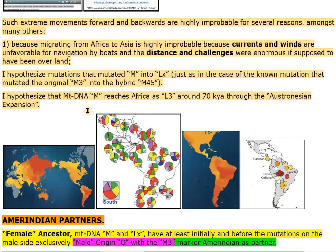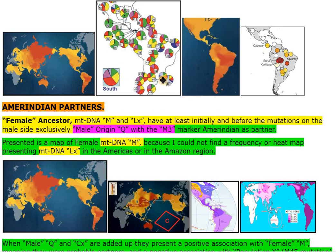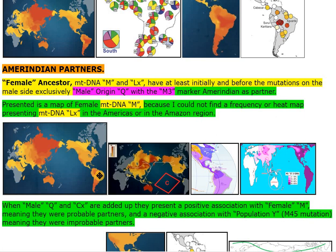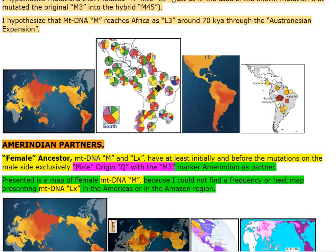I hypothesize that mtDNA M reaches Africa as L3 around 70 kya through the Austronesian expansion. Amerindian partners — female ancestor mtDNA M and LX — have at least initially and before the mutations on the male side exclusively male-origin Q with the M3 marker Amerindian as partner. Presented is a map of female mtDNA M, because I could not find a frequency or heat map presenting mtDNA LX in the Americas or in the Amazon region. When male Q and CX are added up, they present a positive association with female M, meaning they were probable partners, and a negative association with Population Y M45 mutation, meaning they were improbable partners.